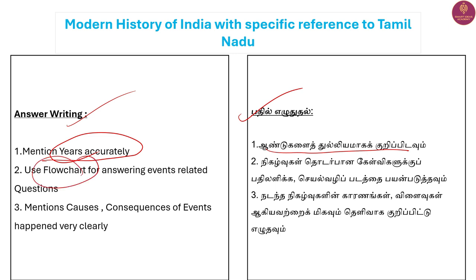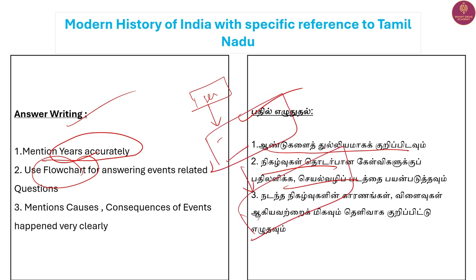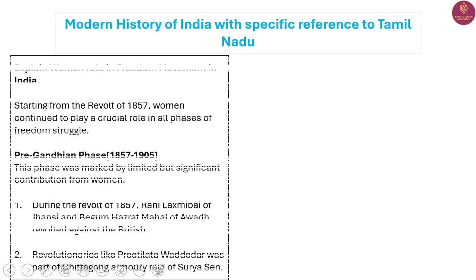If you want to go into a session, it needs to be accurate. The events are structured accurately. If you use a flow chart, you will see a lot of drawings — it will be better for time management and presentation. Focus on causes and consequences of events.